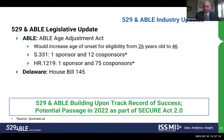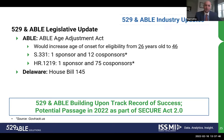On the legislative front, the ABLE Age Adjustment Act continues to be in focus. Senate Bill 331 has one sponsor and 12 co-sponsors; House Bill 1219 has one sponsor and 75 co-sponsors. We believe that as part of Secure Act 2.0, the ABLE Age Adjustment Act can hopefully be passed. Delaware House Bill 145 may result in a state tax deduction on ABLE contributions in the near future. ABLE has launched, is growing, is being used, and there's additional legislative momentum helping it grow.